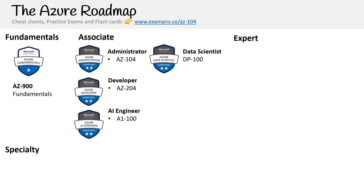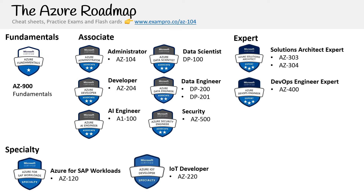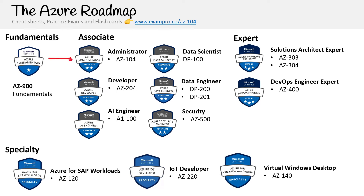Azure has a lot of associate-level certifications, two expert levels, and three specialties currently. Once you have the AZ-900, you get to pick whichever associate you want. If you're looking for a generalized role, the administrator is the most ideal certification to take. I always say it's very similar to the AWS Solutions Architect because it's so broad, and a lot of people who take the AZ-104 are trying to become a Solutions Architect Expert.